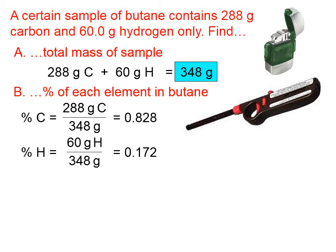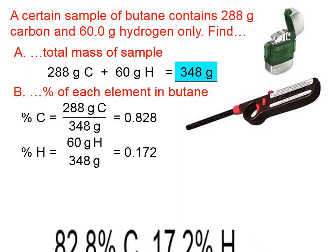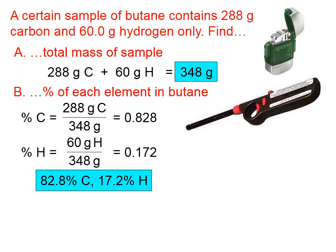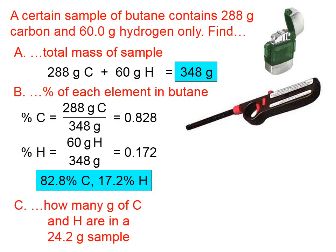If we wanted to show the work, we would show the part that's hydrogen divided by the total. We don't want to express a percentage as 0.828 — we need to convert it to percentage form: 82.8% carbon and 17.2% hydrogen.